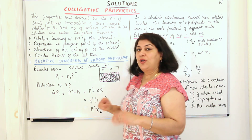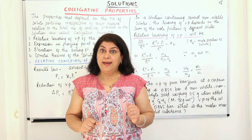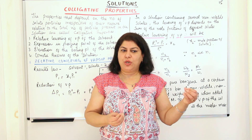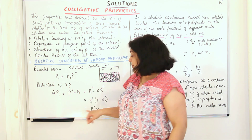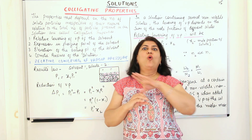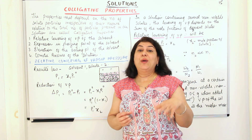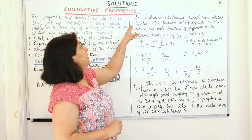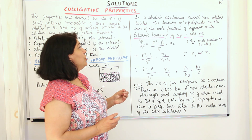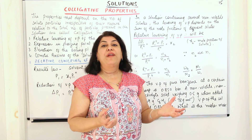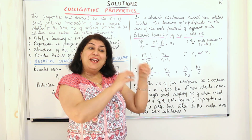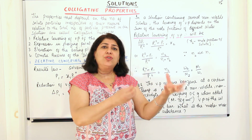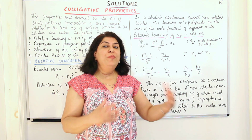Even if you do not have a binary solution and you have more than one solute, x2 would become the sum of the mole fractions of all the solutes present. In a solution containing several non-volatile solutes, the lowering of vapor pressure depends on the sum of mole fractions of the different solutes. This is because the colligative property — the relative lowering of vapor pressure — does not depend on the nature of the solute; it only depends on the total number of molecules of however many components there may be.